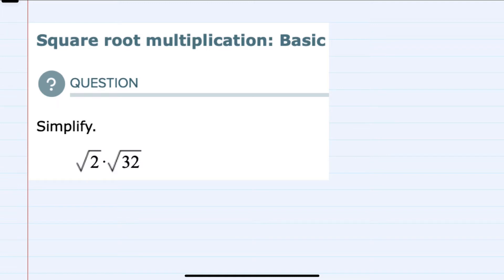Since these are both square roots, we can rewrite this as a common square root where we are multiplying the numbers underneath.